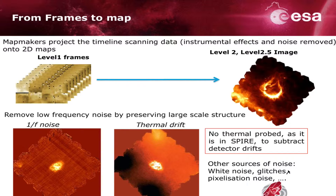What do the map makers do? They project clean timelines — clean of instrumental effects and noise — into two-dimensional maps. The most challenging aspect for map makers in a far-infrared instrument like PACS is to remove low-frequency noise while preserving, at the same time, large-scale structures. This is important for galactic field observations, nearby galaxies, and deep fields with cirrus emission. The main sources of low-frequency noise are 1/f noise and thermal drift.